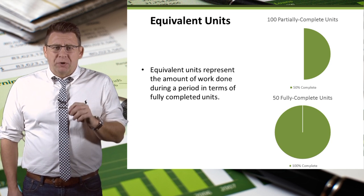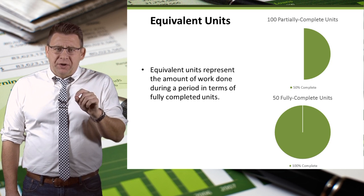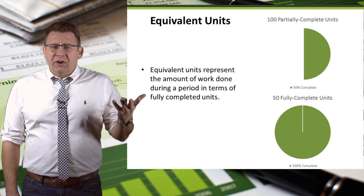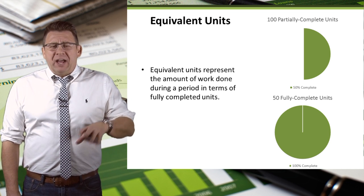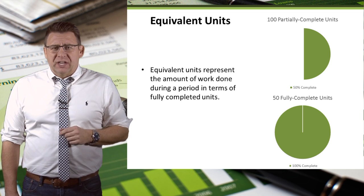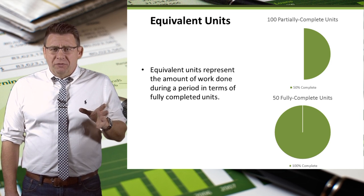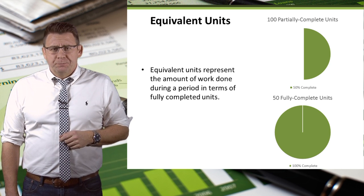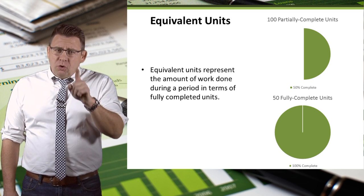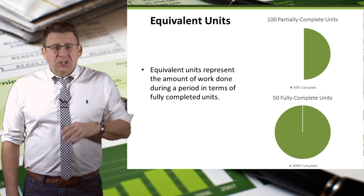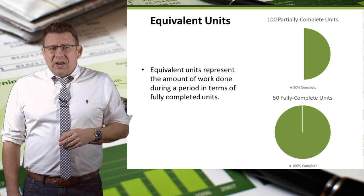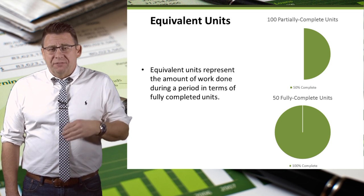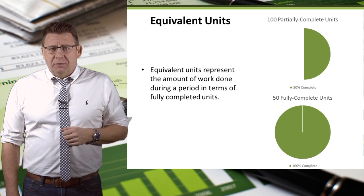Equivalent units represent the amount of work done during a period in terms of fully completed units. A very simple example would be if I had 100 units that are 50% complete — that's the equivalent of 50 units that are 100% complete. And I know the cost of fully completed units, so I could apply the product cost times the 50 equivalent units to determine the cost of the 100 partially completed units.